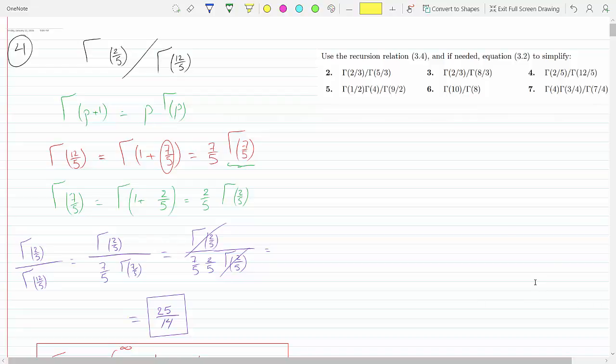Okay, so here in this question it says use the recursion formula 3.4 and if needed equation 3.2 to simplify the following. I think I've done this question before in one of the videos, but the audio may have been corrupt, so I figured I would go ahead and explain it and post it so people who didn't get the chance can actually listen to it.